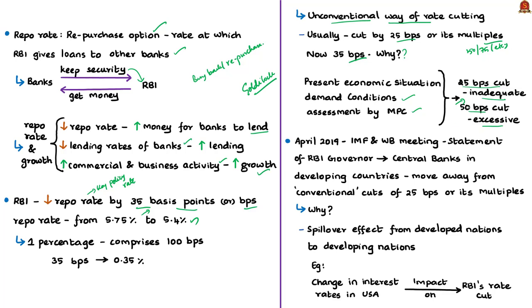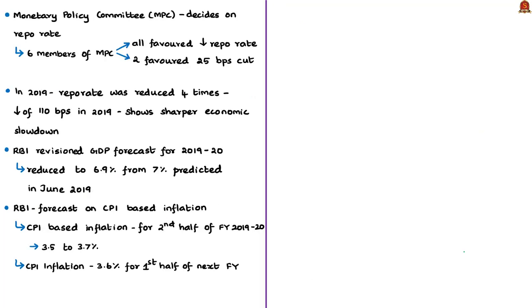In April 2019, the Governor of the RBI told an IMF and World Bank meeting that central banks in emerging economies must move away from the conventional way of cutting rates by 25 basis points or its multiples, as this convention resulted in spillovers from developed to emerging markets. The Monetary Policy Committee of the RBI, which has six members including the Governor and Deputy Governor, takes decisions on fixing repo rates. All six members voted for a repo rate cut this time, though two members backed only a 25 basis points cut.